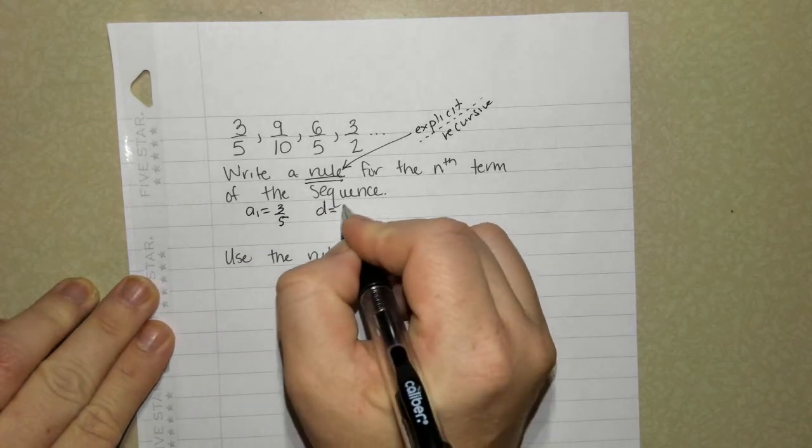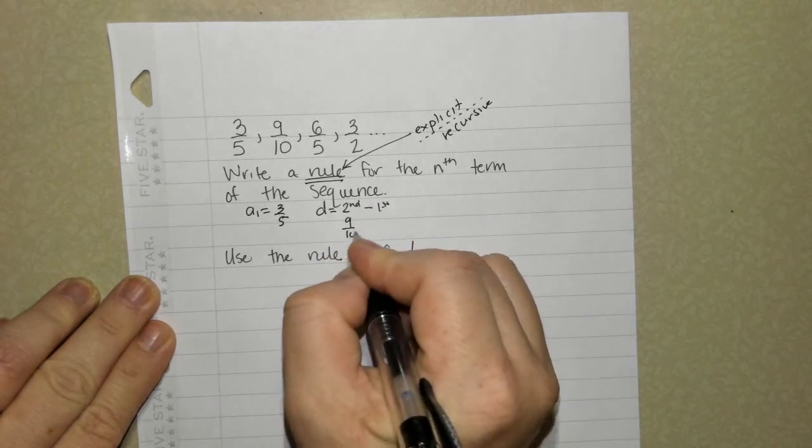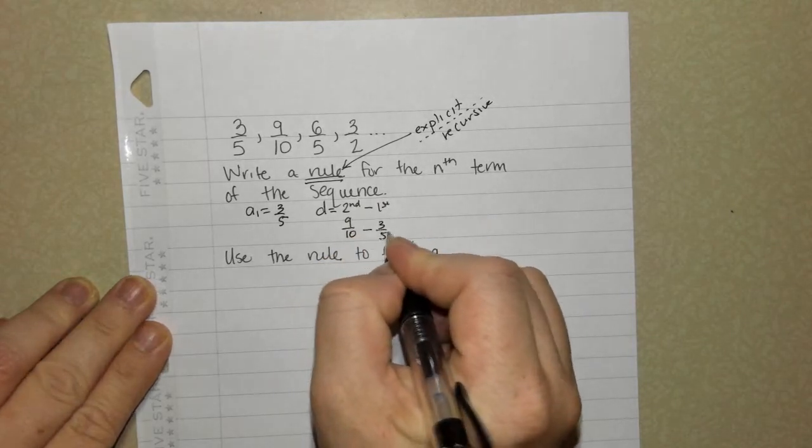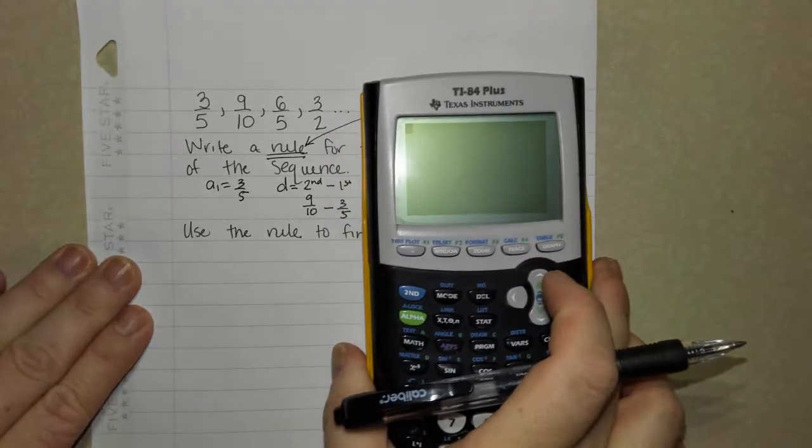Now to figure out the common difference, you take the second term, subtract the first term. Second term is 9 tenths, subtract first term, which is 3 fifths. Some of you are going to do that in your head, finding a common denominator quickly. Others will feel more confident using a calculator.